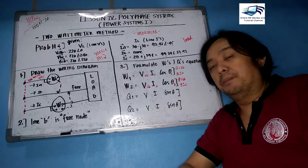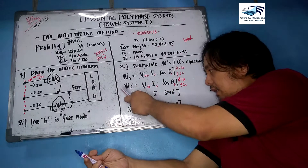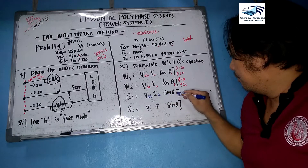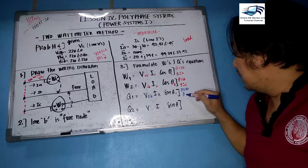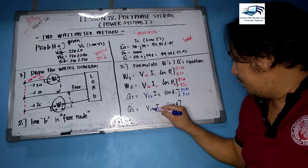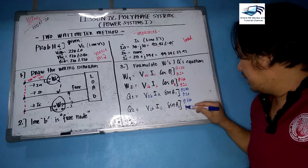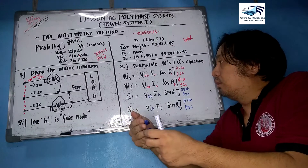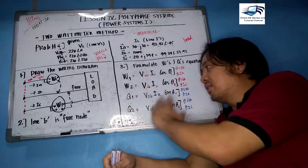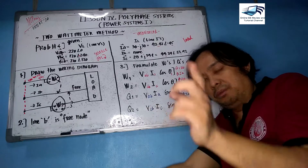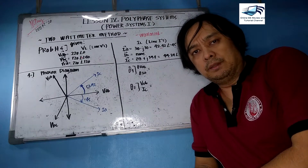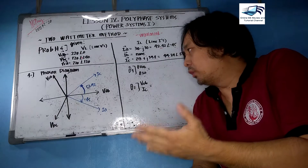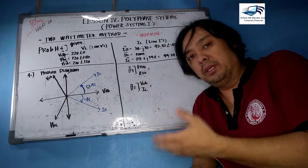The only difference between wattmeters and reactive meters is the design angles. You copy the parameters established for W1 and W2. For Q1 you have Vab, Ia, theta one, and theta Vab minus theta Ia. For Q2 you have Vcb, Ic, theta two, theta Vcb and theta Ic. These equations formulated in this procedure will be used for the calculations in the next steps.